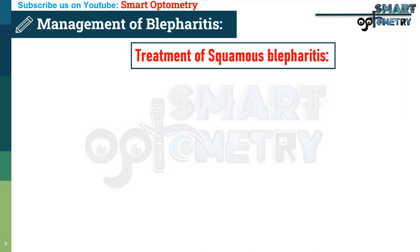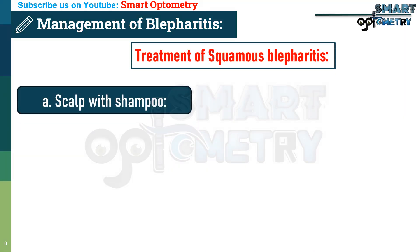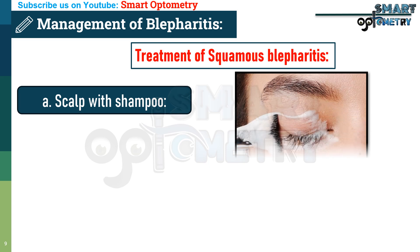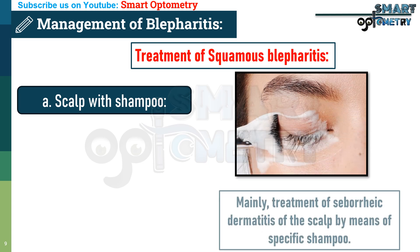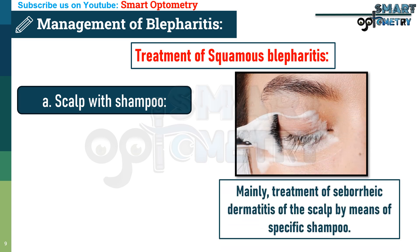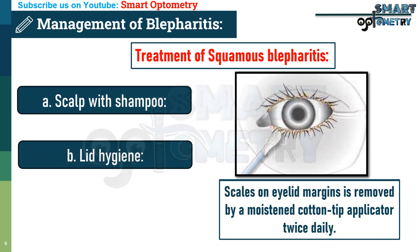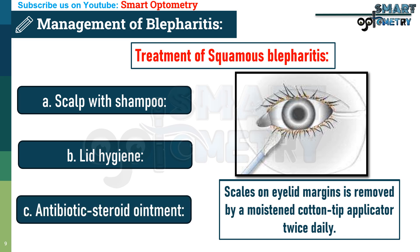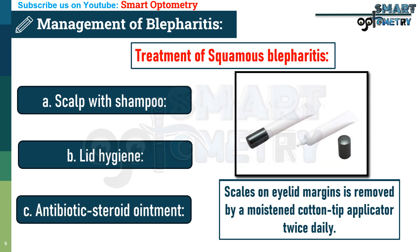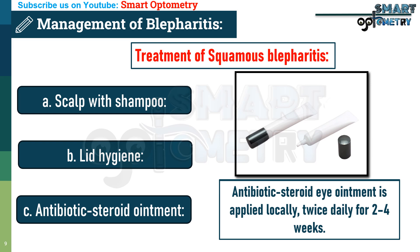Treatment of squamous blepharitis. A: scalp treatment with shampoo — primarily, treatment of seborrheic dermatitis of the scalp by means of a specific shampoo. B: lid hygiene — scales on eyelid margins are removed by a moistened cotton-tip applicator twice daily. C: antibiotic-steroid eye ointment is applied locally twice daily for 2–4 weeks.